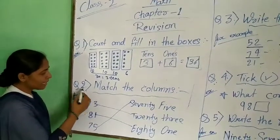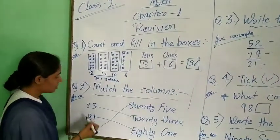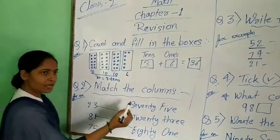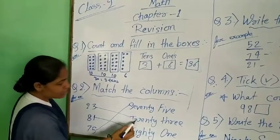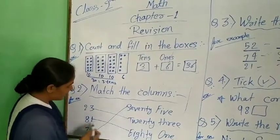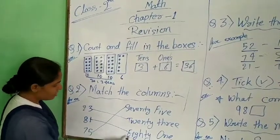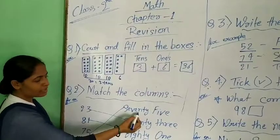Question number second. Match the columns. Numbers match the numbers name. For example, 93 matches 93, 81 matches 81, 75 matches 75.